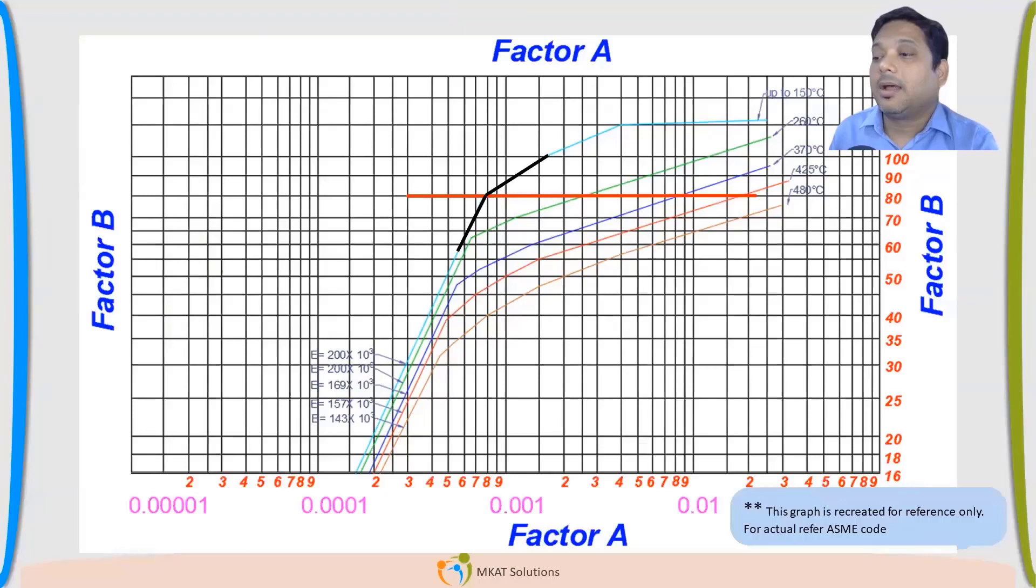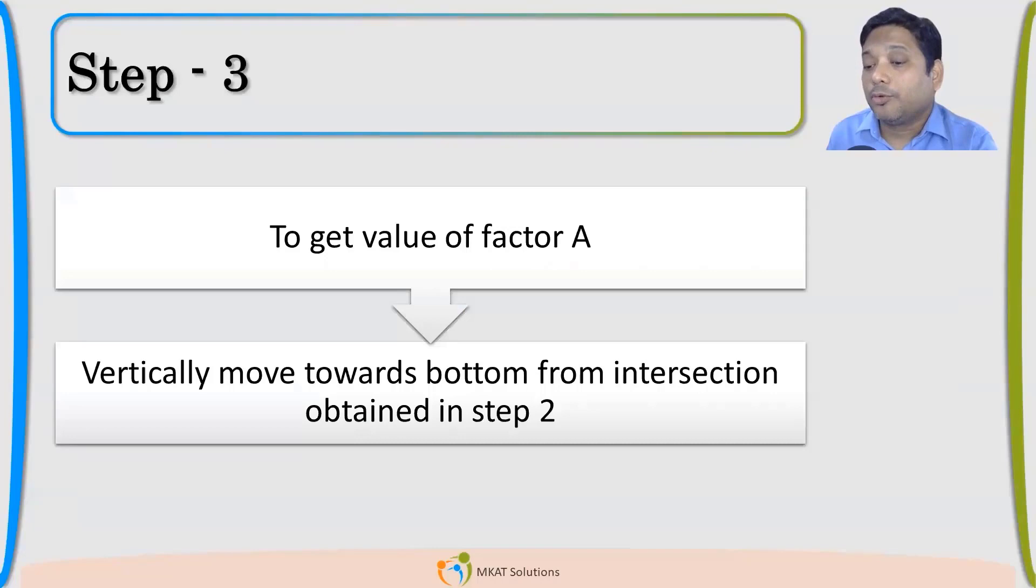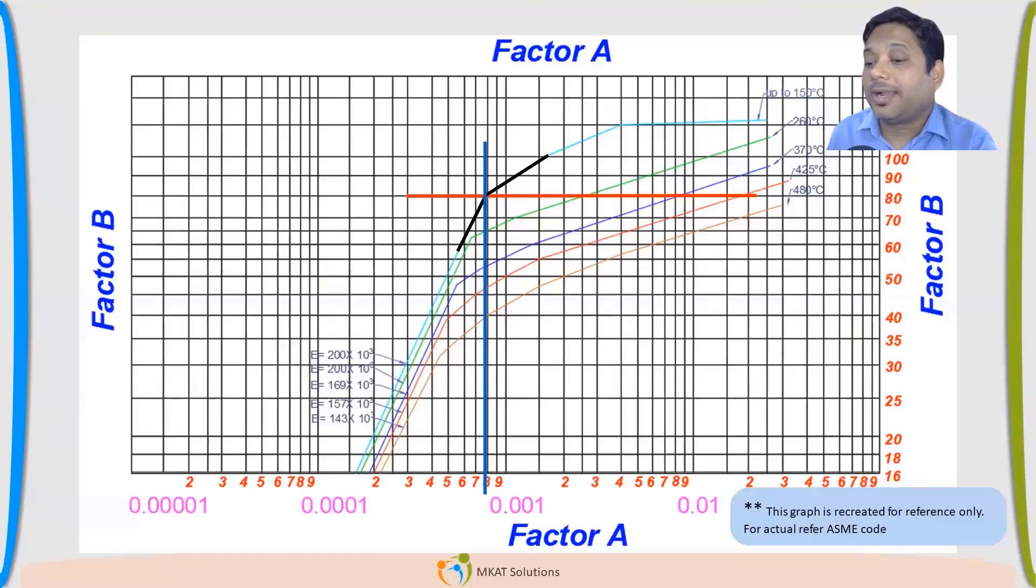From this factor B value, I will move horizontal. Wherever it is touching this line because my temperature is 150. It is touching here. Here it is getting crossed. Now with this, I will be able to find the factor A value. Tell me what factor A value you are getting from this graph. Now this graph we have created considering the ASME graph, but this is not the exact same graph. You may get different values from the graph which we are showing. Intentionally, we have created a little different graph to avoid the copyright issue.